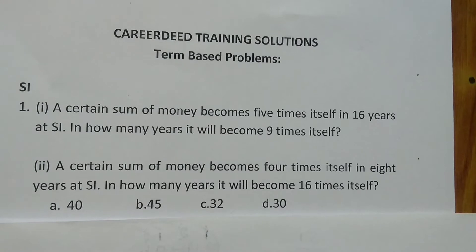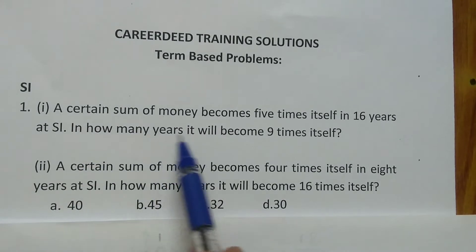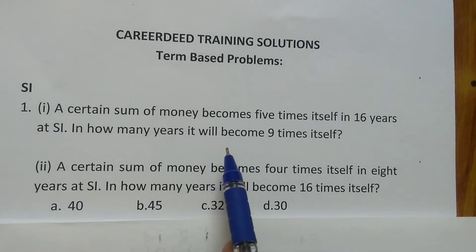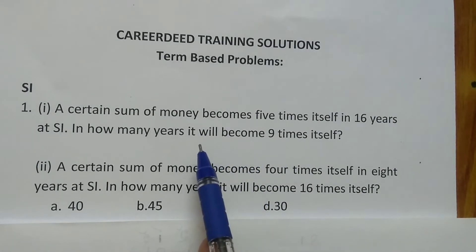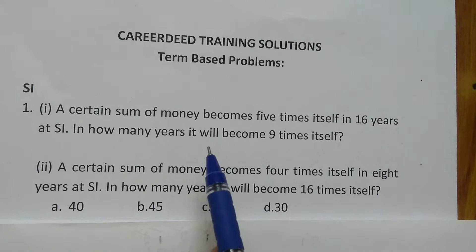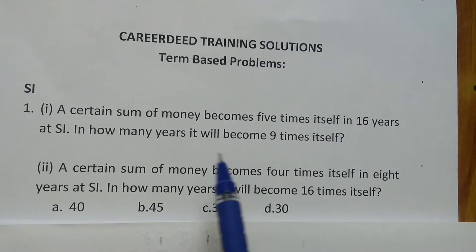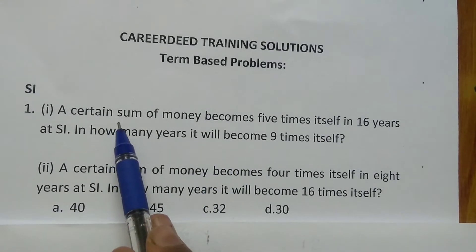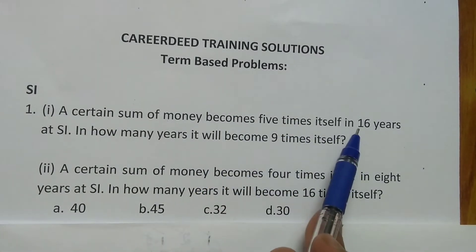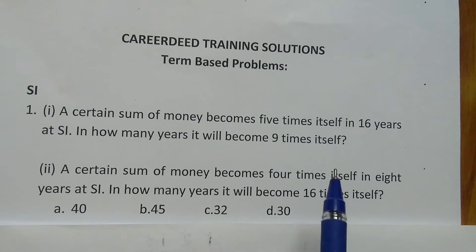The first question: a certain sum of money becomes 5 times itself in 16 years at simple interest. In how many years will it become 9 times itself? Simple interest is constant — if the first year the rate is 10%, each subsequent year also gives 10%, so you accumulate steadily.